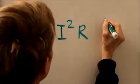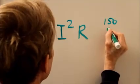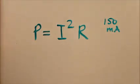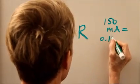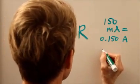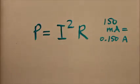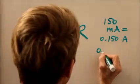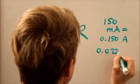Well, our current, 150 milliamps, is 0.150 amps. And when we square that, we get 0.0225.